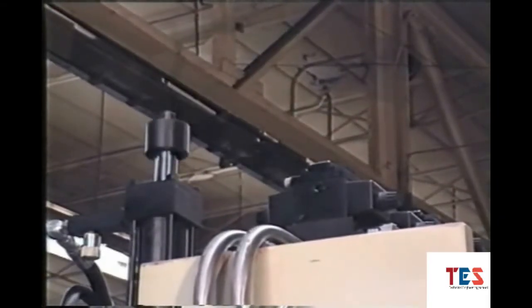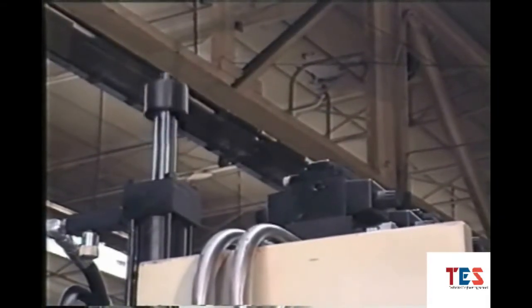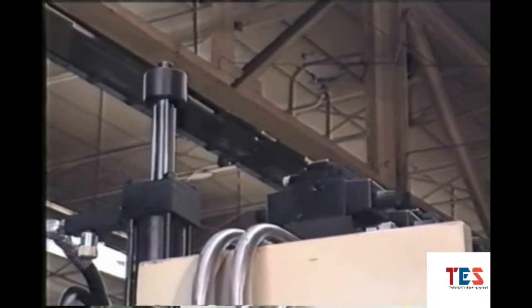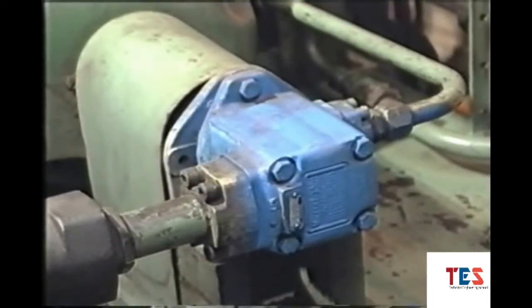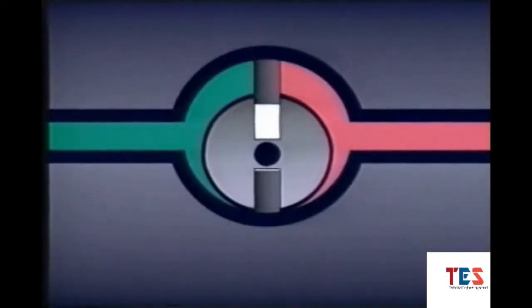The work a system can do is usually measured in horsepower. Industrial hydraulic systems use positive displacement pumps in which the output is the same for each revolution of the pump. As the pump turns, fluid is moved or displaced from an area of increasing volume to an area of decreasing volume.